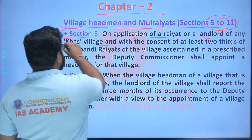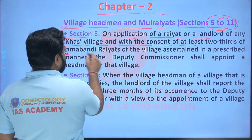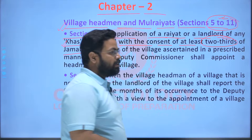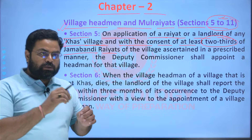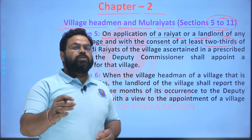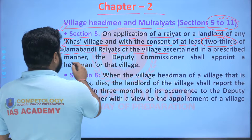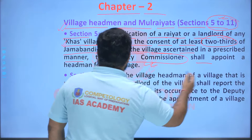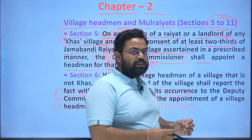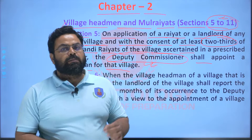For a Khas village, if the Raiyat and the landlord make an application with the consent of at least two-thirds majority of the Jamabandi Raiyat — those Raiyat whose names are mentioned as residents of that village in the records of rights — and if they ascertain in a prescribed manner to the DC, then the DC shall appoint a headman for that village. This section is about the appointment of a village headman for a Khas village.